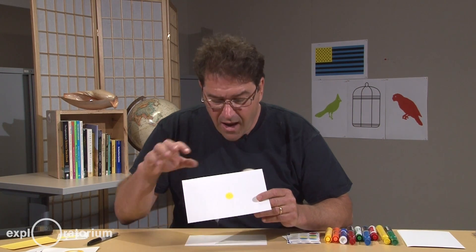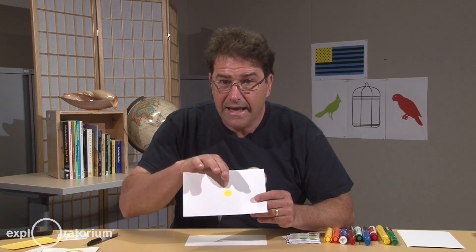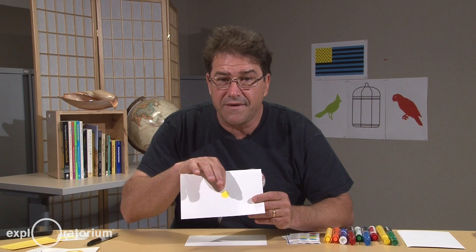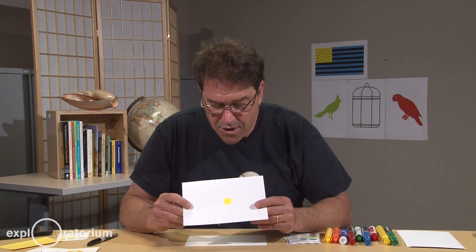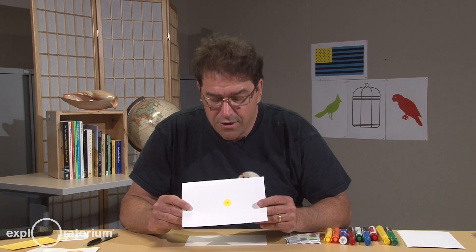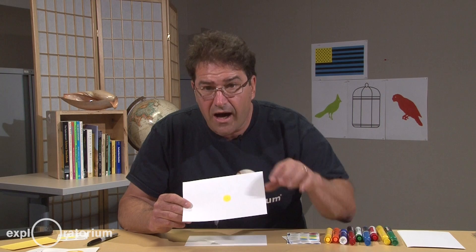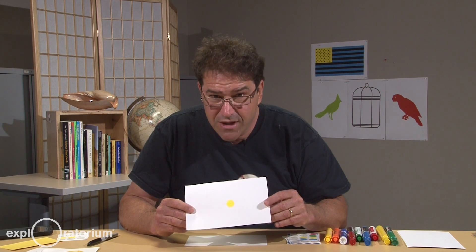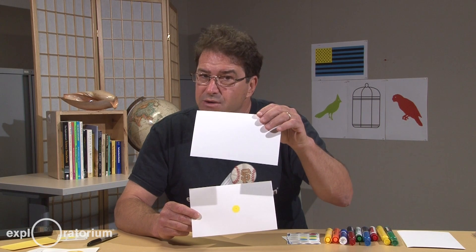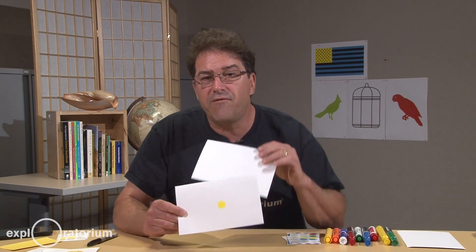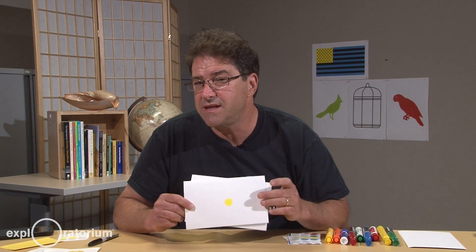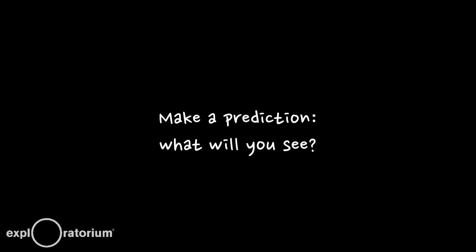I'm going to do this activity very simply. I've got a yellow sticky dot with a very small dark dot right in the center to help me with my focus. What you're going to do is stare at that dot for 20 seconds, and then after you're done, you're going to look at this white card and see what you see. Before I do this, why don't you make a prediction as to what you're going to see in place of the yellow dot.